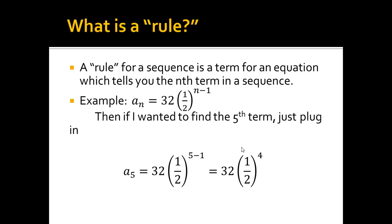And I would do this calculation and I would get 32 times 1 half to the fourth power, and I would find that a sub 5 is equal to 2. Because if I take 32 and I multiply it by 1 half to the fourth power, that's the same as dividing it by 2 four times. So I'd get 16, 8, 4, 2.